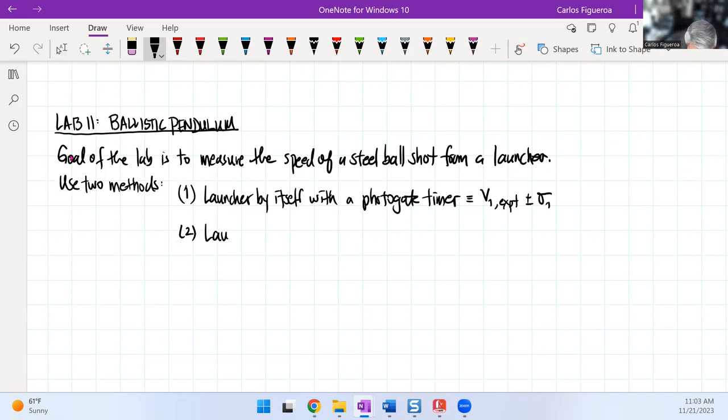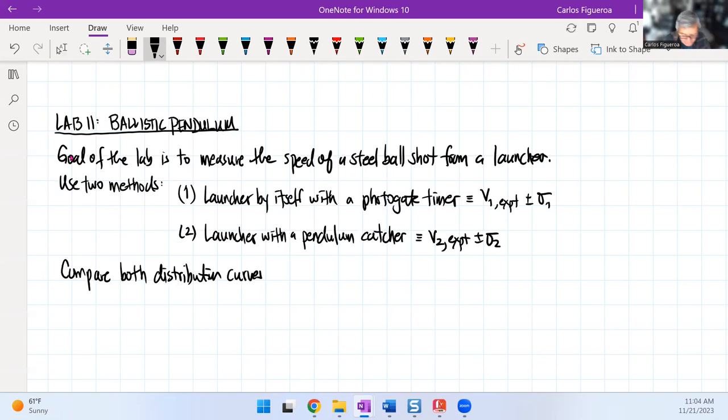And then the second one is that we're going to use the launcher with a pendulum catcher. And in this guy here, we're going to call that V2 experiment with its own confidence interval. And the whole goal here is that we want to compare both distribution curves. If they overlap, then they measure the same speed. If they don't overlap, they measure different speeds.